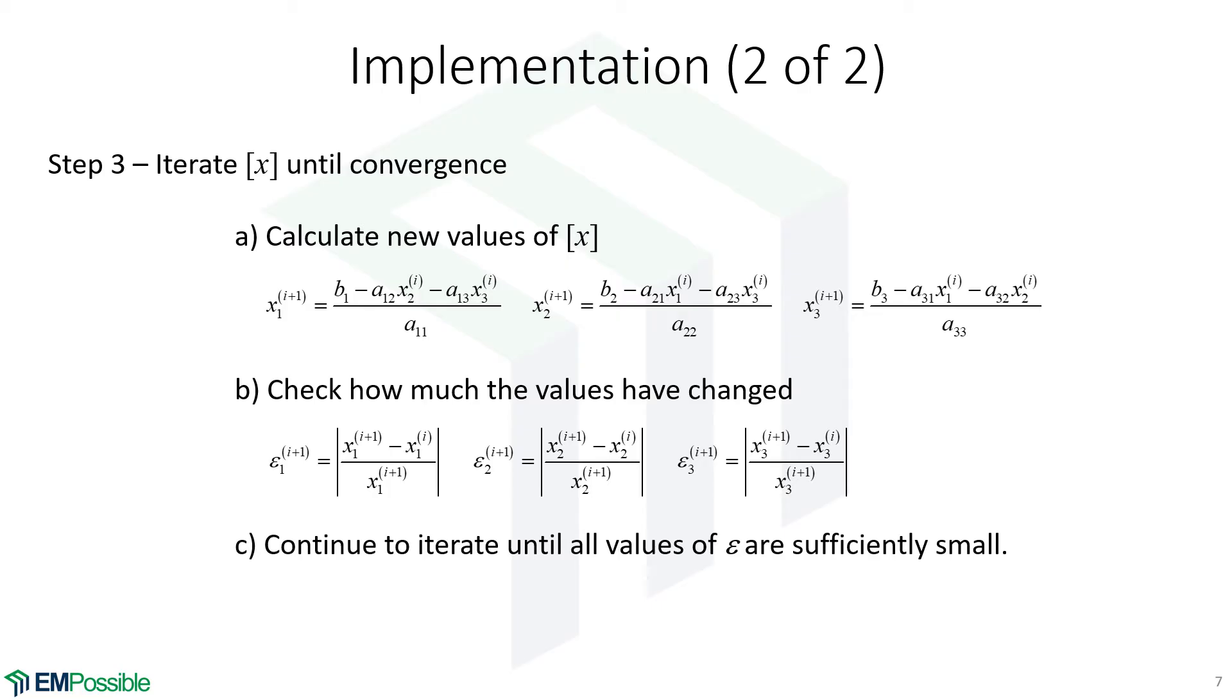So now we go into our iteration. So we have this initial guess. The first thing we're going to do is go through these three equations to calculate better values for x1, x2, and x3. Once we do that, we're going to compare what we've just calculated to the previous iteration. And, of course, we'll normalize that to our X value. So we really kind of have percent errors here. So we have an error for x1, an error for x2, an error for x3. And we might add them up. We might look at the largest one, but we're going to iterate until all of those errors are sufficiently small, and then we'll have our answer. That's it.